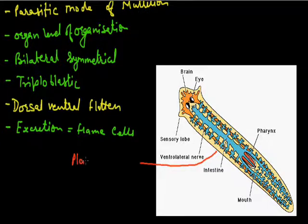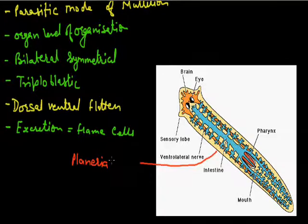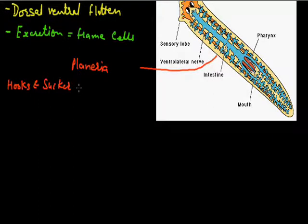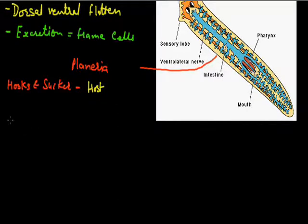Planaria has a very high power of regeneration. If you cut this animal into two or three parts, every part will develop into a new animal. These animals also have hooks and suckers in their mouth for obtaining food from the host. Because they are parasites, hooks enter the host body and injure it while suckers suck food from the host.